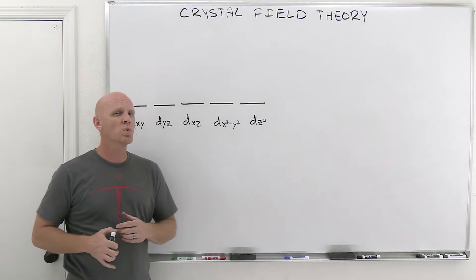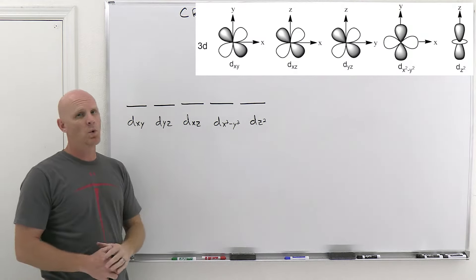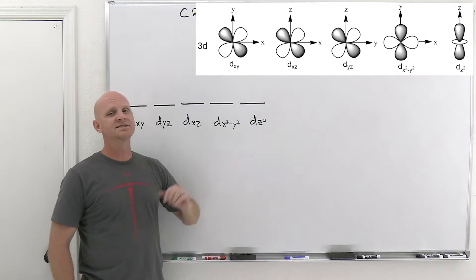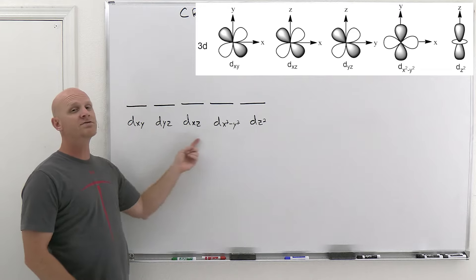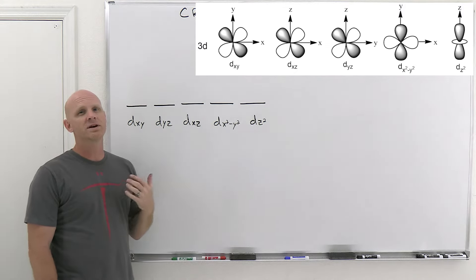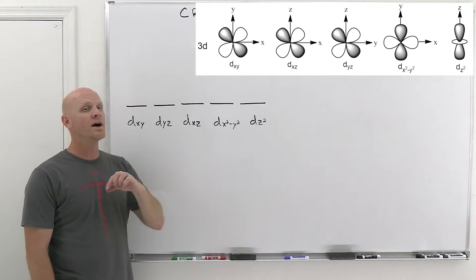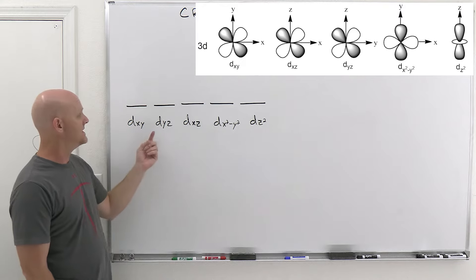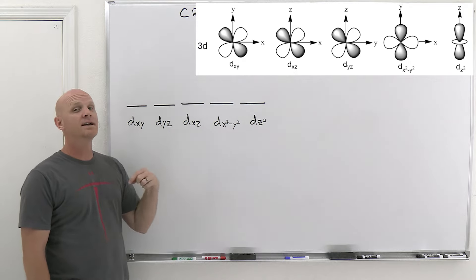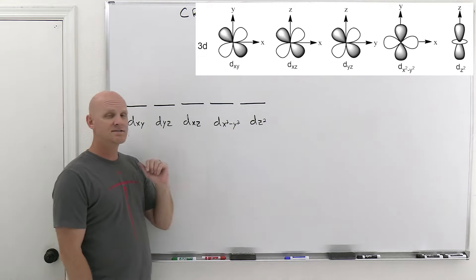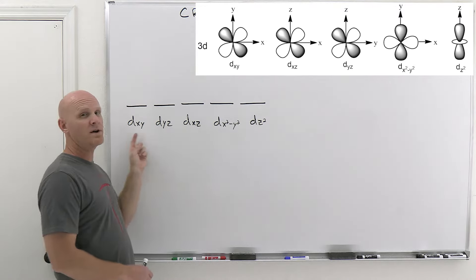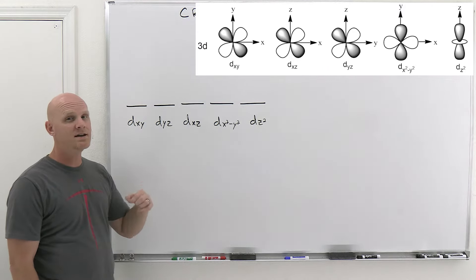For crystal field theory, we need to review the five 3d orbitals: dxy, dyz, dxz, dx²−y², and dz². The first three look like four-leaf clovers with four lobes. dxy has lobes in the xy plane but lying in between the x and y axes — not on the axes. Similarly, dyz lies between the y and z axes, and dxz between the x and z axes. The key point: these three orbitals have electron density between the axes.